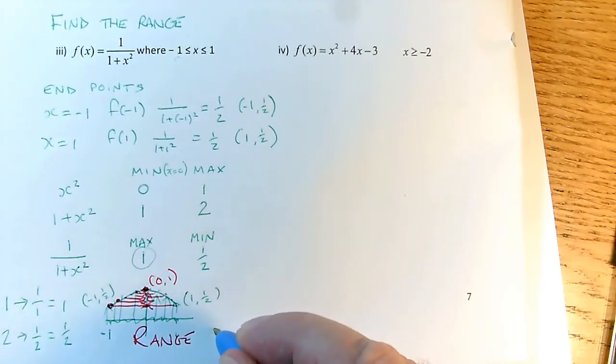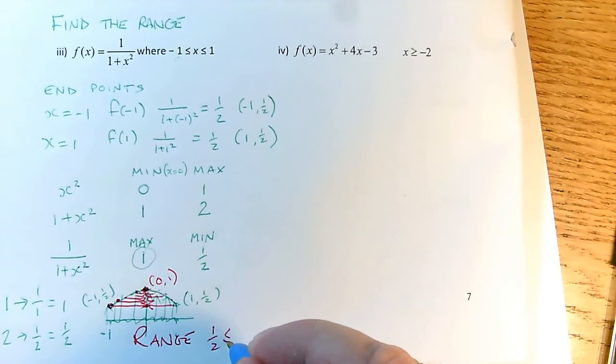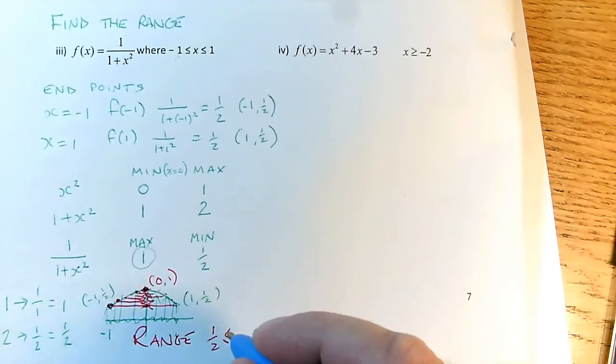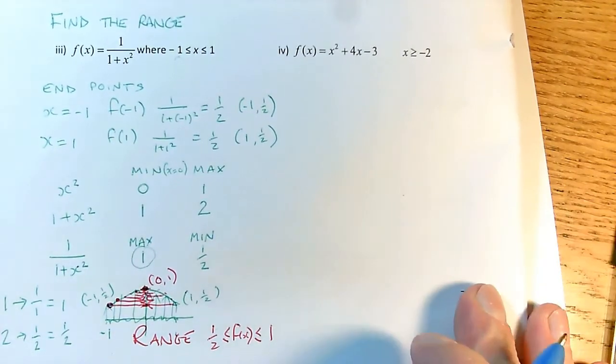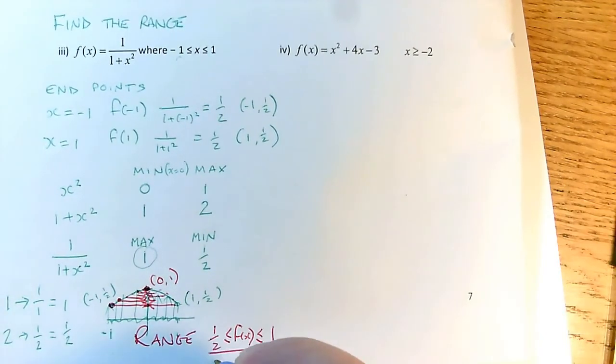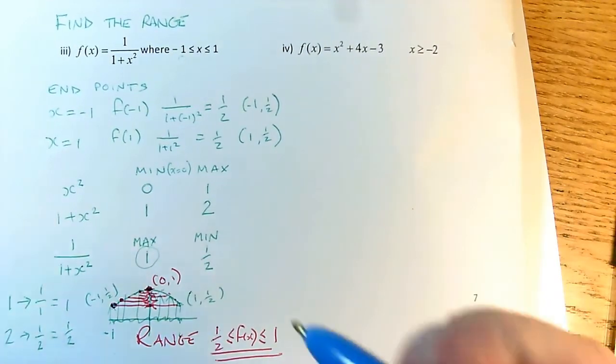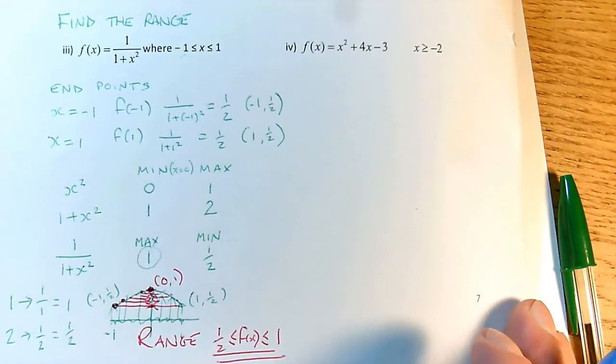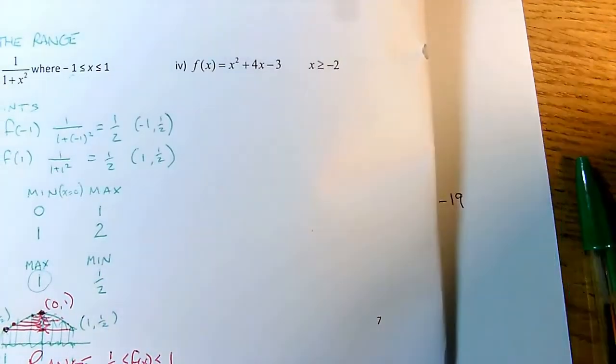So my range, which is going to be my answer to the question, are the y values I can get out, which are from a half up to and including 1. So I want a half is less than or equal to something, is less than or equal to 1. But I mustn't put y here because it's a function. I need to say f of x. I definitely mustn't put x there. So that is my range. That's the answer to this question, and I think that's the trickiest one of this set. Let's have a quick look at the next one.